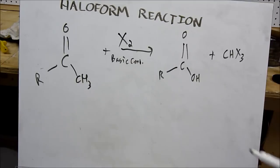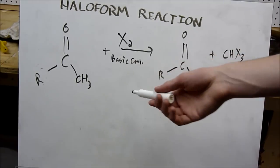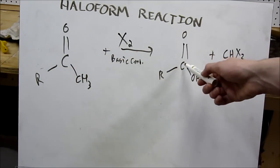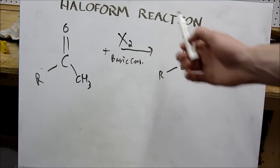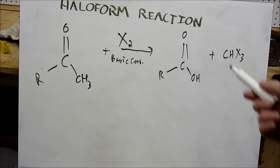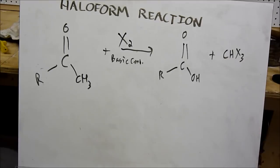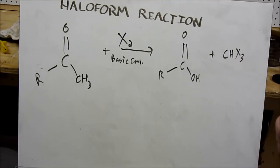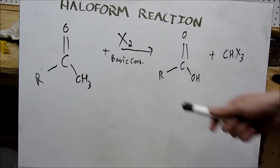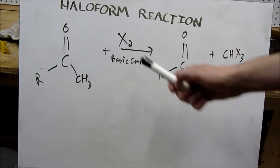Because we used dimethyl ketone, this R stays a methyl group, so we get acetic acid — also known as ethanoic acid. And if I were to use methyl ethyl ketone, we'd end up with propanoic acid and chloroform. This works with other halogens as well — iodine and bromine — but not fluorine, because the hypofluorite ion is too unstable in water to remain long enough to perform this reaction.